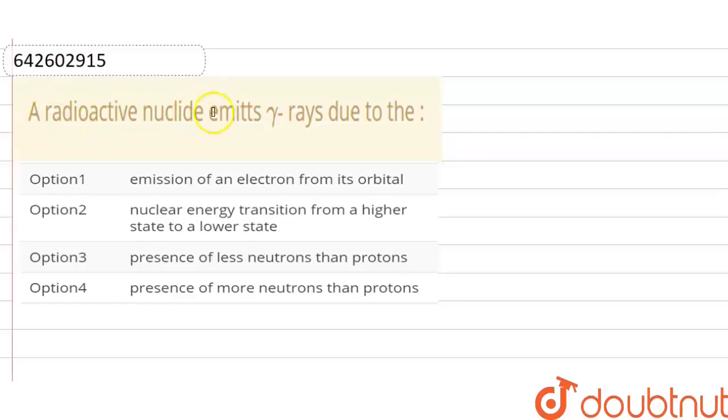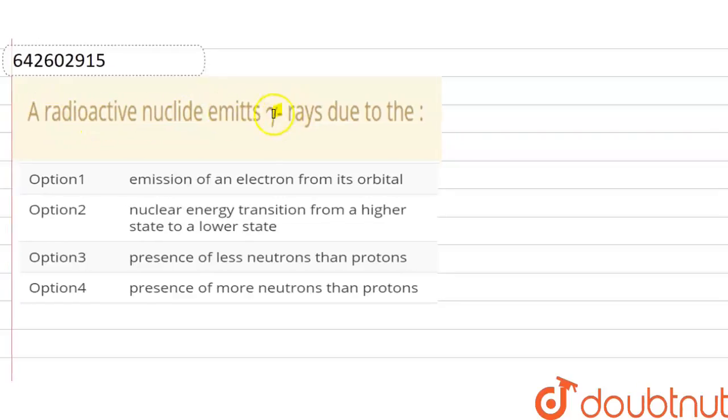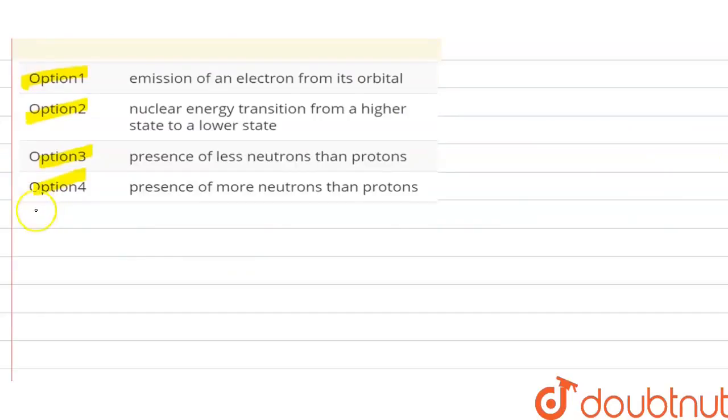A radioactive nucleide emits gamma rays due to the: option 1, emission of an electron from its orbital; option 2, nuclear energy transition from a higher state to a lower state; option 3, presence of less neutrons than protons; option 4, presence of more neutrons than protons. Now we have to discuss this question.